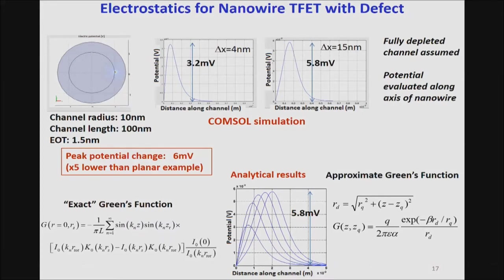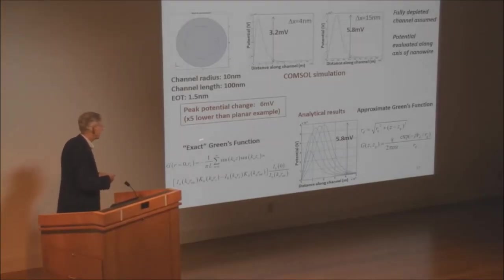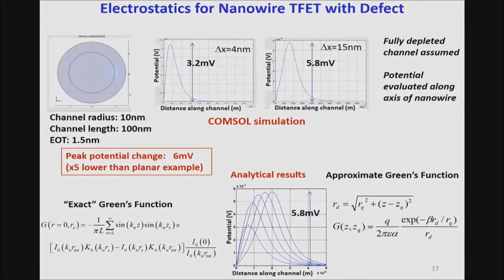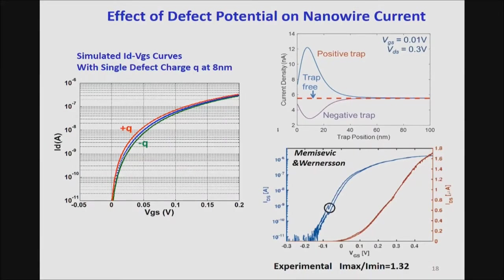The potentials associated with defect structures in the nanowire can be reproduced with Green's functions written in terms of Bessel functions, or more approximately with exponentials that agree quite well. The presence of a defect modifies the IV curves for positive and negative charges — the effect is much smaller than in the double-gate structure, but still noticeable, changing the current by a factor of 1.4 to 2 at various points on the curve.